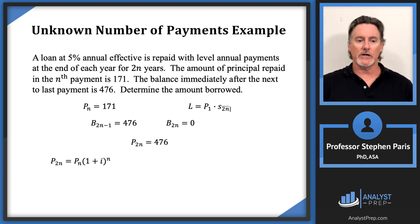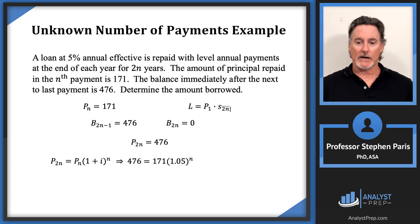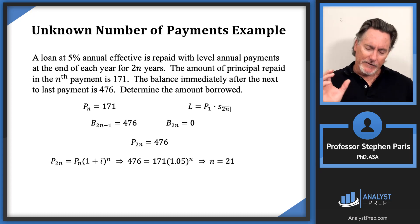With level payments, P_{2n} = P_n × (1+i)^n. Substituting in 476 for P_{2n}, 171 for P_n, and i = 5%, I can solve for n. Solving that equation gives n = 21.